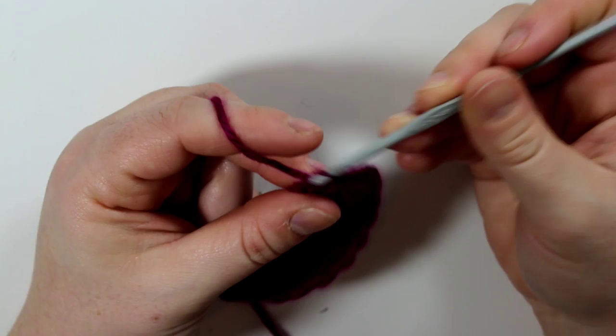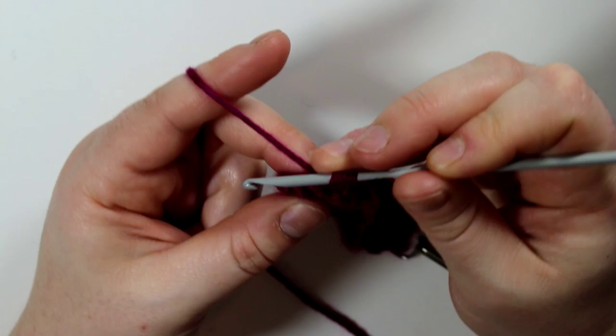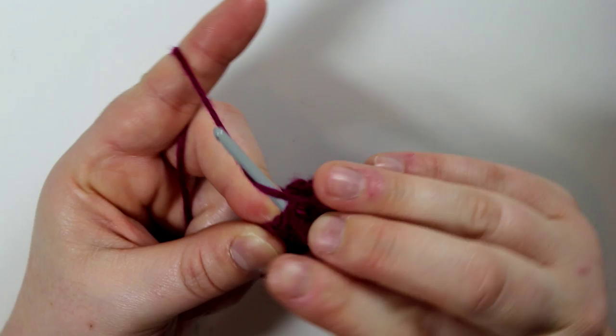Then you'll have three stitches left. Because it's an odd number I just go into the first stitch, grab some yarn, go into the second stitch, grab some yarn, go to the third stitch, grab some yarn, and then I'm going to pull some yarn through the four loops remaining on the hook, then chain one and tighten it a little bit.